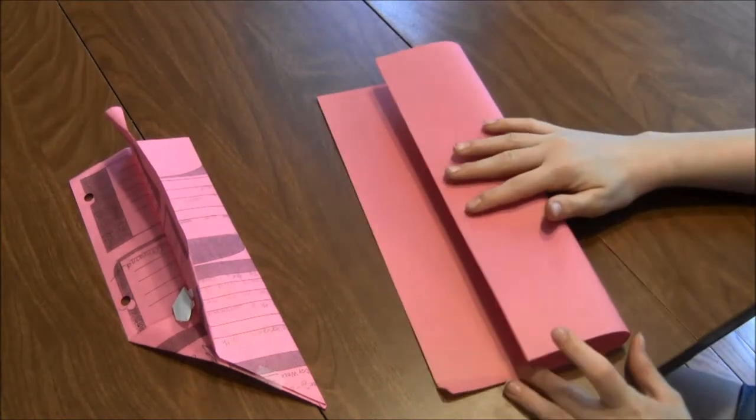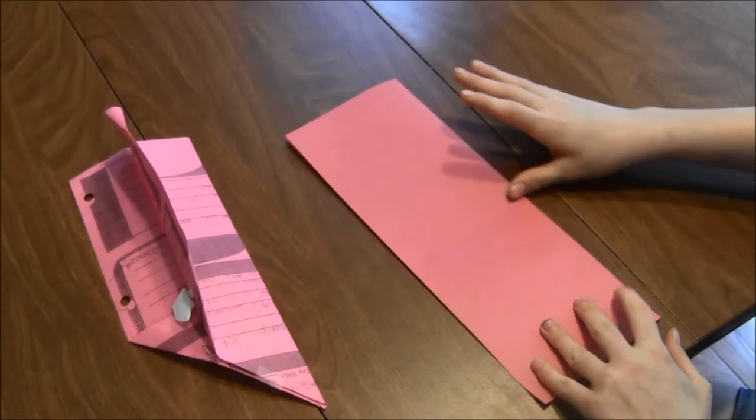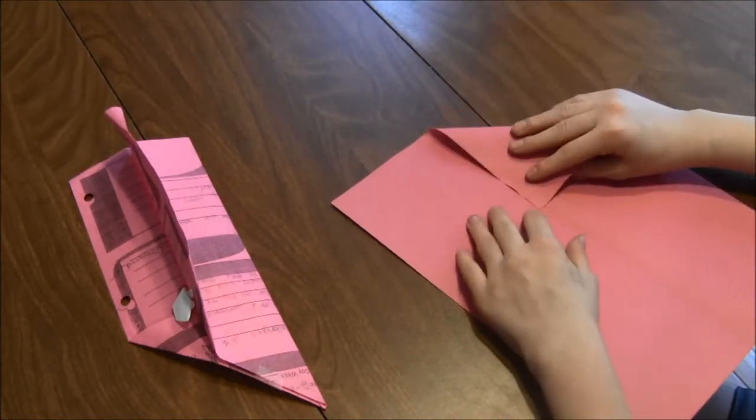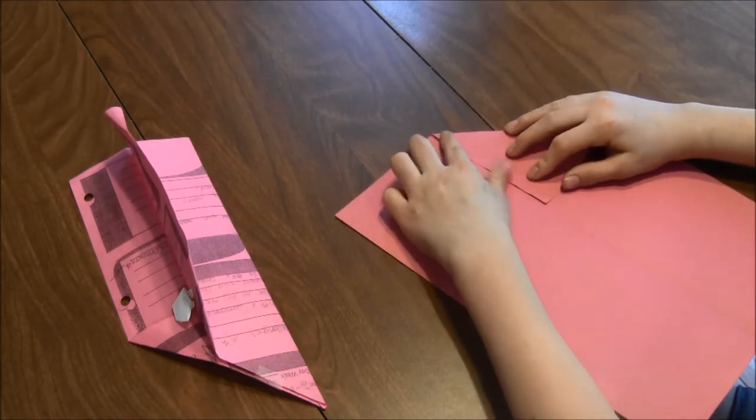First, you fold the whole paper in half. Unfold it and take the corners and bring them into your fold.